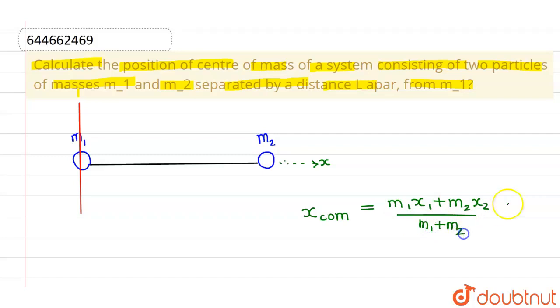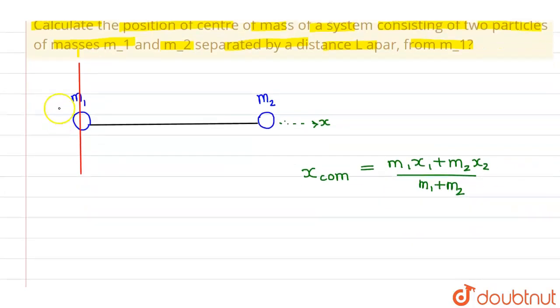Now since we are finding out with respect to this axis, x1 is 0. x1 is the distance of mass m1 from this axis which is 0, and since the separation between these two is L, the distance of mass 2 from this axis is L.